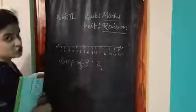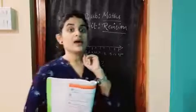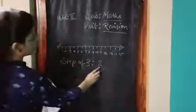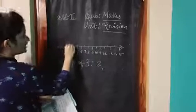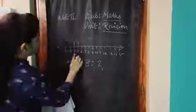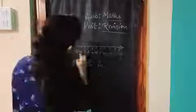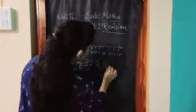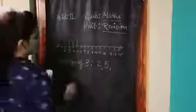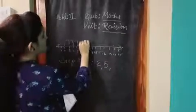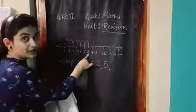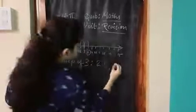So bachho, last sum mein humne step of 2 liye the. Ab hum is sum mein step of 3 lete hain. So chaliye, 2 se step of 3 lete hain: 2 to 3 is one step, 3 to 4 is second step, and 4 to 5 is 3rd step. So our number is 5. 2 to 5, we will write number 5. Now, 5 to 6, 1 step; 6 to 7, 2nd step; 7 to 8, 3rd step. So our answer is 8.